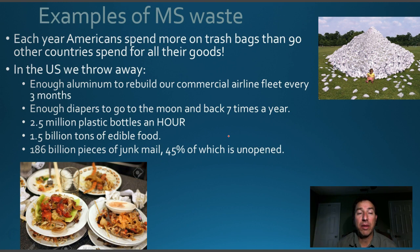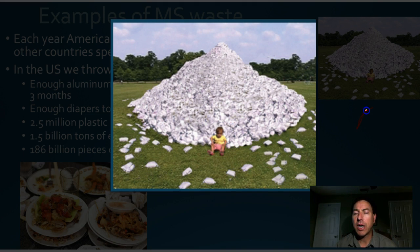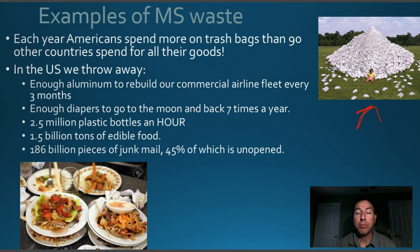Aluminum cans are highly recyclable, yet Americans still throw away enough to rebuild our entire airline fleet every three months — aluminum is a great natural resource that could be recycled and reused but just gets thrown away. Diapers are another big one. One child goes through a huge pile of diapers, and those diapers contain not only plastic but human waste with bacteria, viruses, and pathogens that also have to be accounted for.